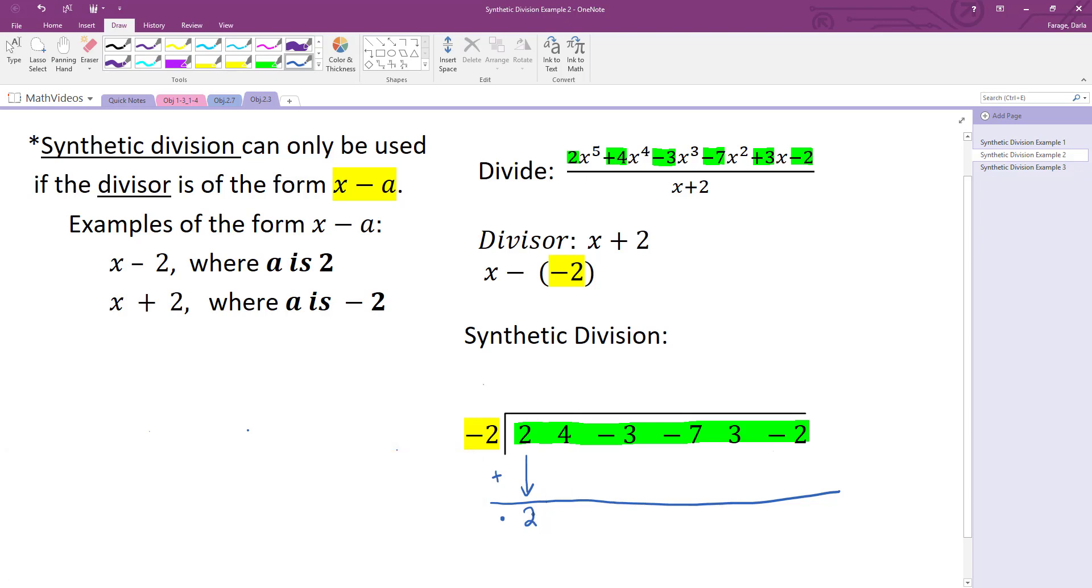The way synthetic division works is you pull down that very first digit of 2 and you multiply it by your a value. So when you multiply 2 times negative 2, you get negative 4. So then put that above the line. And now that you're above the line, you're going to add those results. So 4, negative 4 makes 0. When you fall below the line, you're going to multiply it by your a. So 0 times negative 2 is 0. When you fall above the line, you're going to add your coefficient to your result, and you get negative 3.